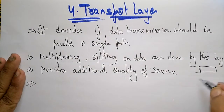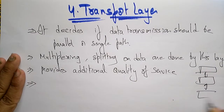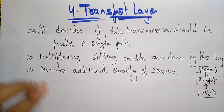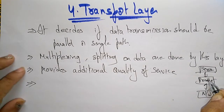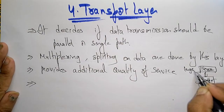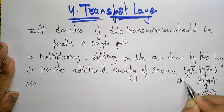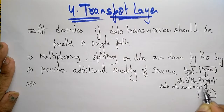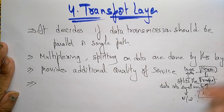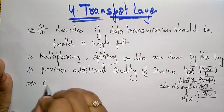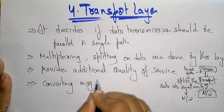The transport layer receives messages from the session layer — the layer present above it. It takes large data from the session layer, splits it into small units, and passes those smaller units down to the network layer. So it does the work of converting messages into smaller units for transmission.